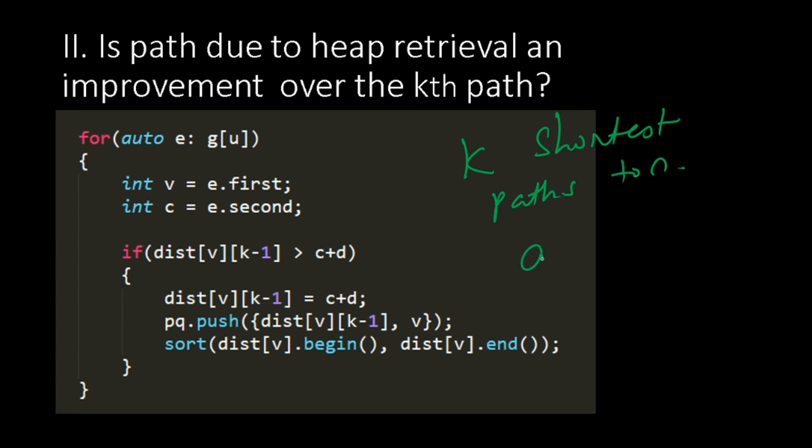So when we do this. By the time we are done with our heap. We will have k shortest paths to n. How do you retrieve them? For auto path in distance[n] print path. As simple as that.